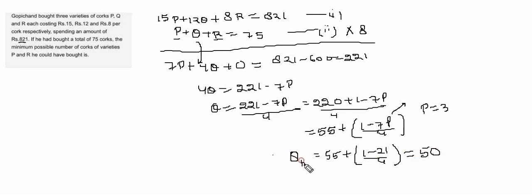So maximum value of Q will be 50, and P plus Q plus R equals 75. So value of P plus R will be 75 minus 50, which equals 25. So minimum possible value of P plus R equals 25.